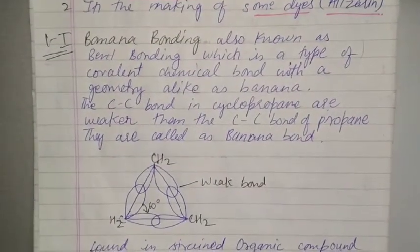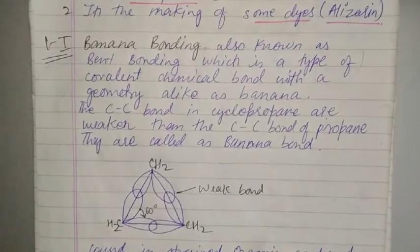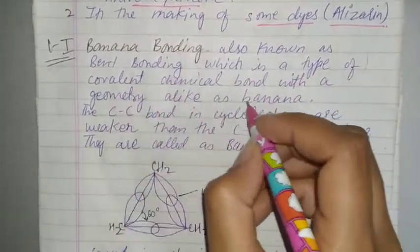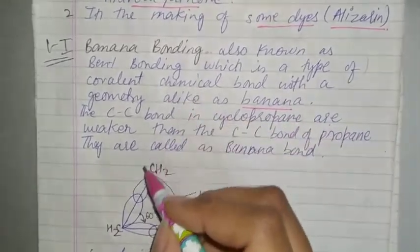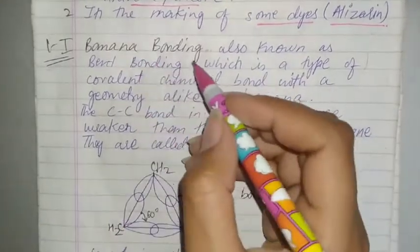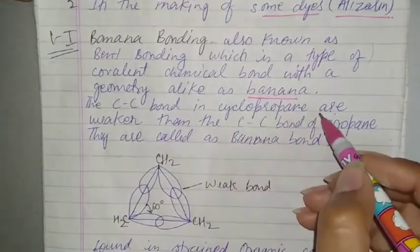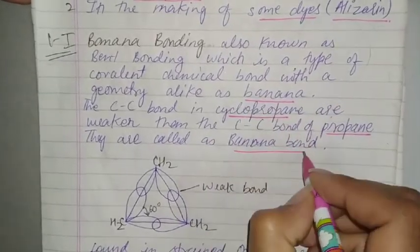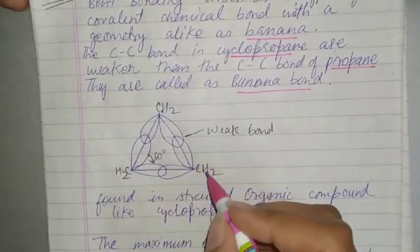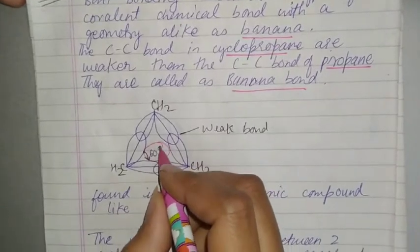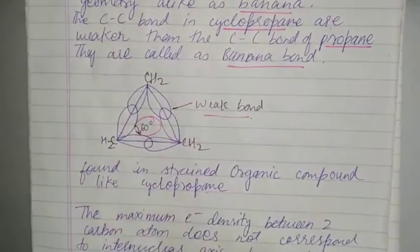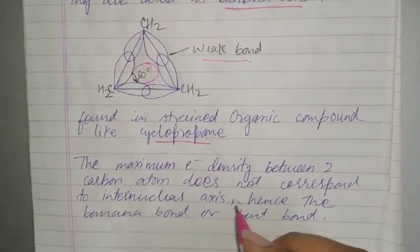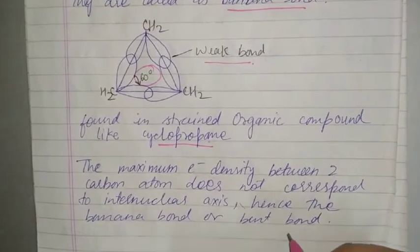Next question: what is banana bonding? Banana bonding comes from Coulson theory from unit 5. Banana bonding is also called bent bonding, which is a type of covalent chemical bond with geometry like a banana. The carbon-carbon bond in cyclopropane are weaker than the carbon-carbon bond of propane. This is cyclopropane and its bond angle is 60 degree. This is weak bond. It is found in strained organic compounds like cyclopropane. The maximum electron density between two carbon atoms does not correspond to internuclear axis, hence the banana bond or bent bond.